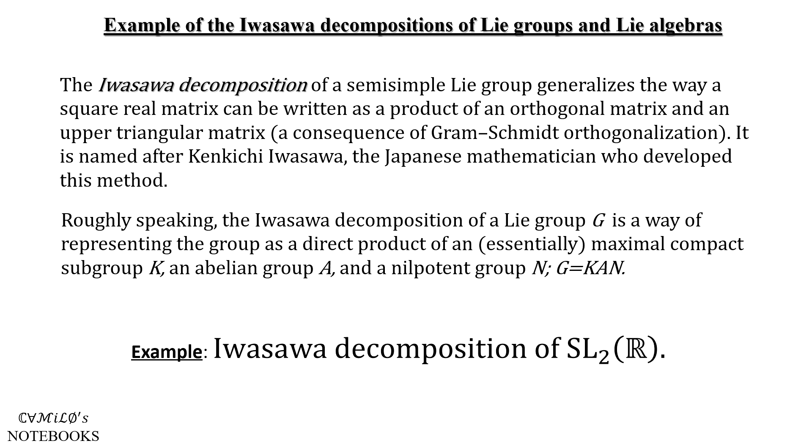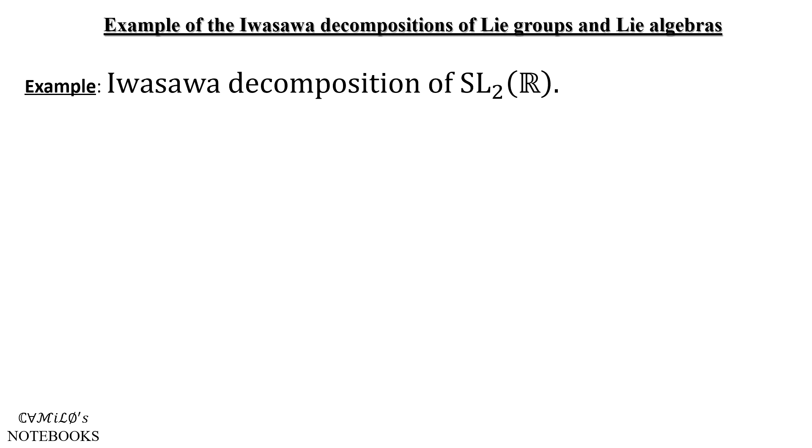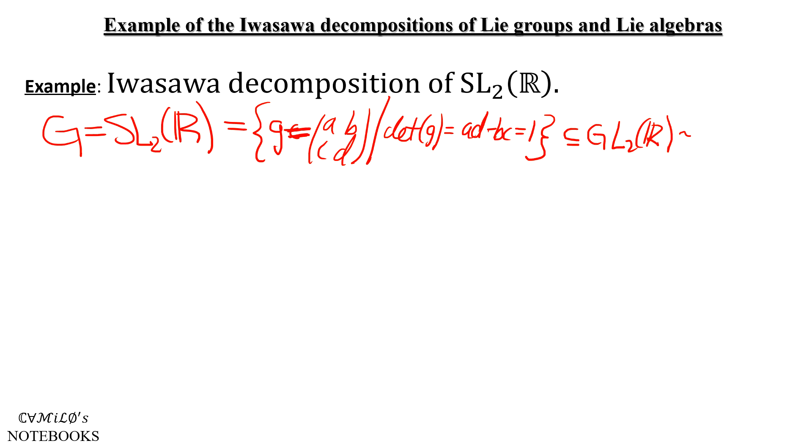So our example, we will decompose SL₂(ℝ). So we're going to let G be SL₂(ℝ), this is the set of matrices, we'll call them G, but as a matrix they're A, B, C, D such that their determinant is equal to 1. And this of course naturally sits inside GL₂(ℝ), which is isomorphic, at least as a topological space to the four-dimensional real space.